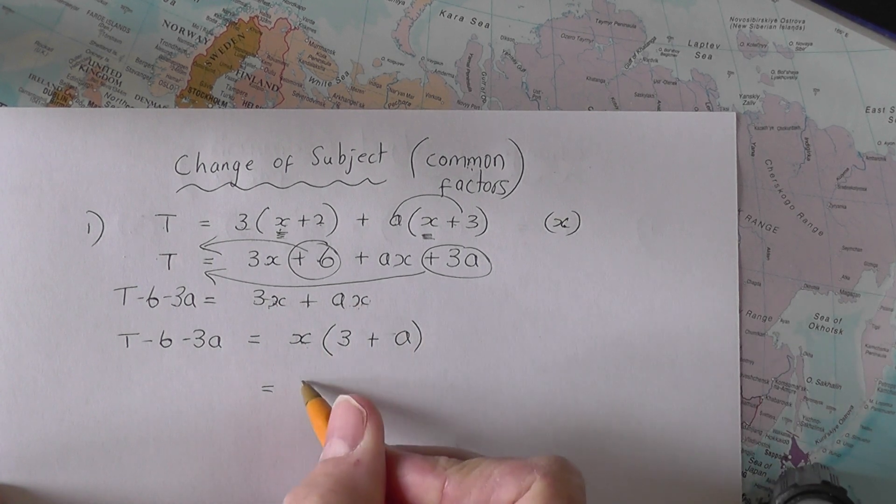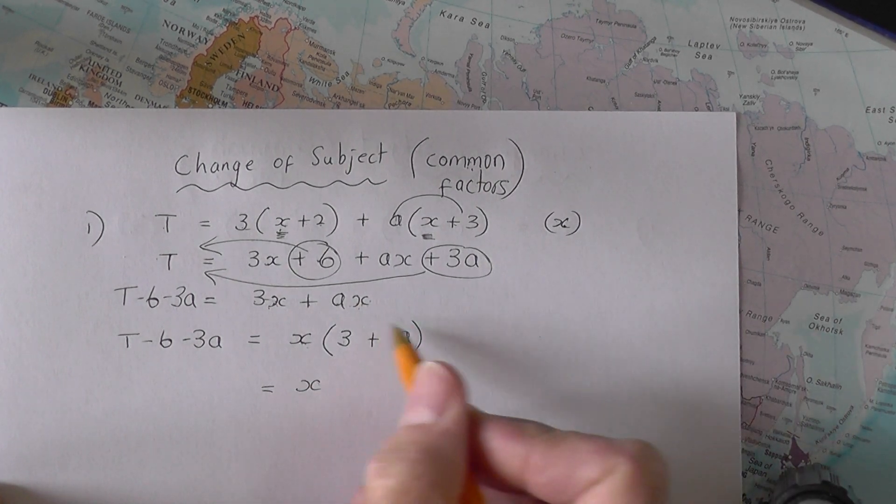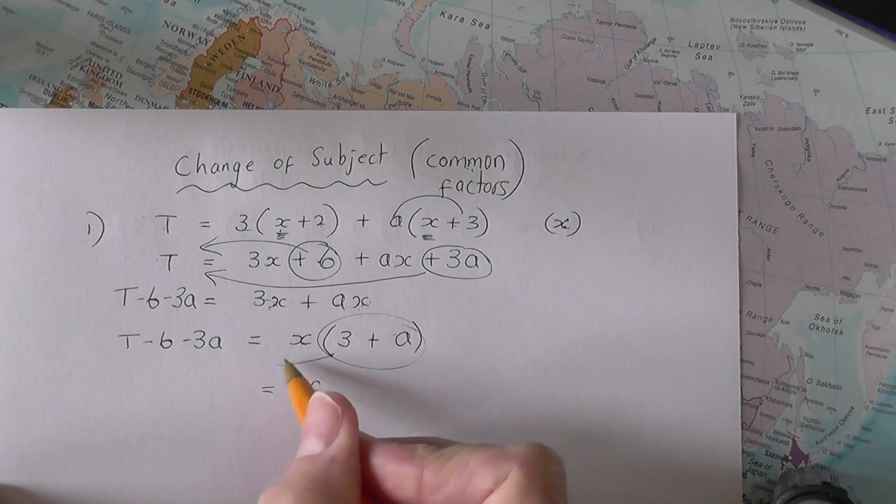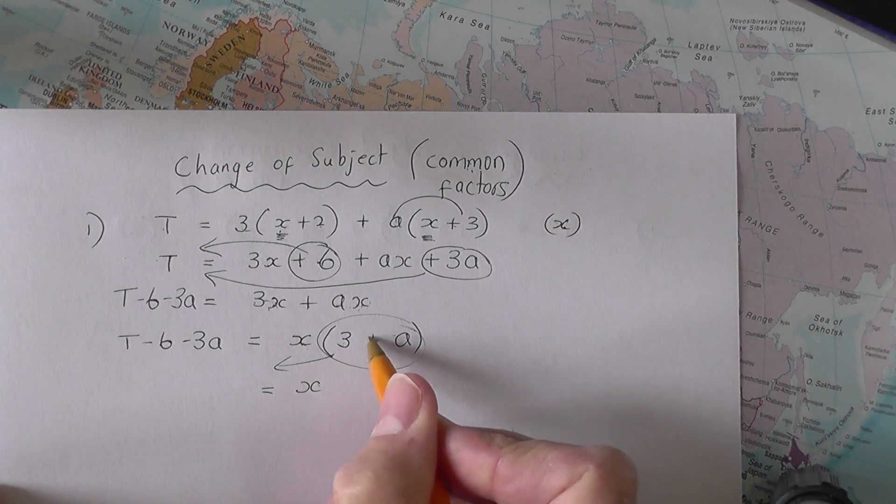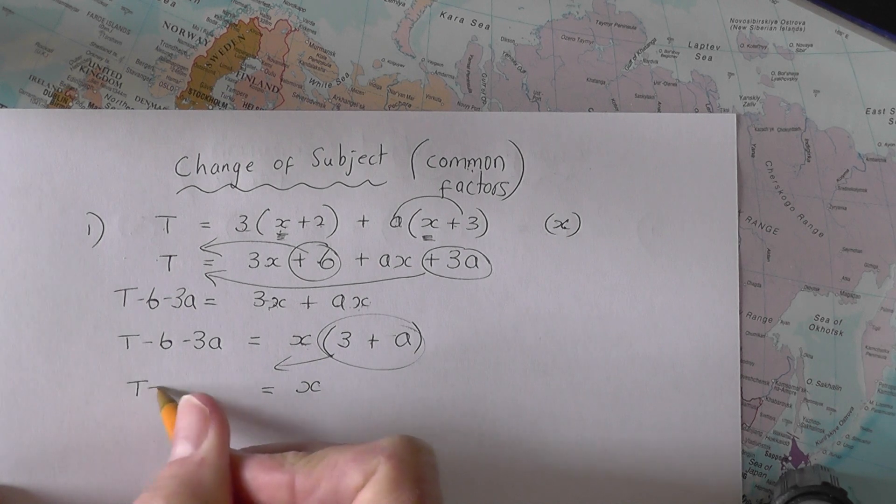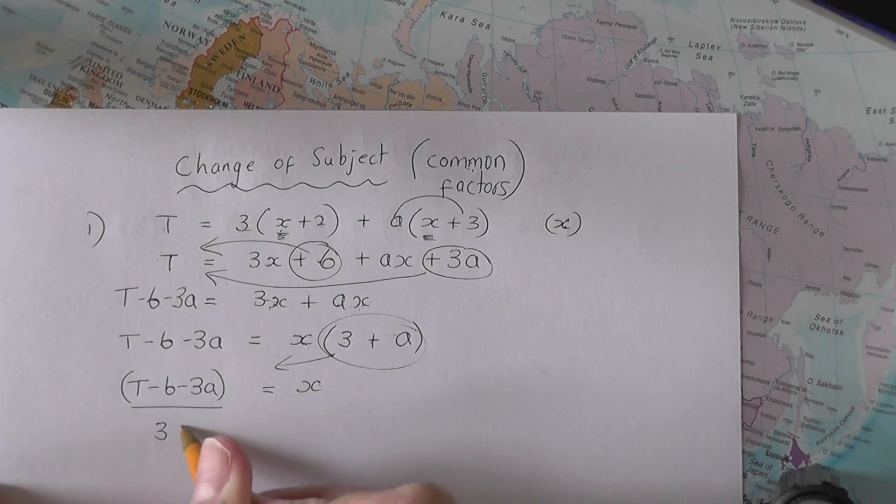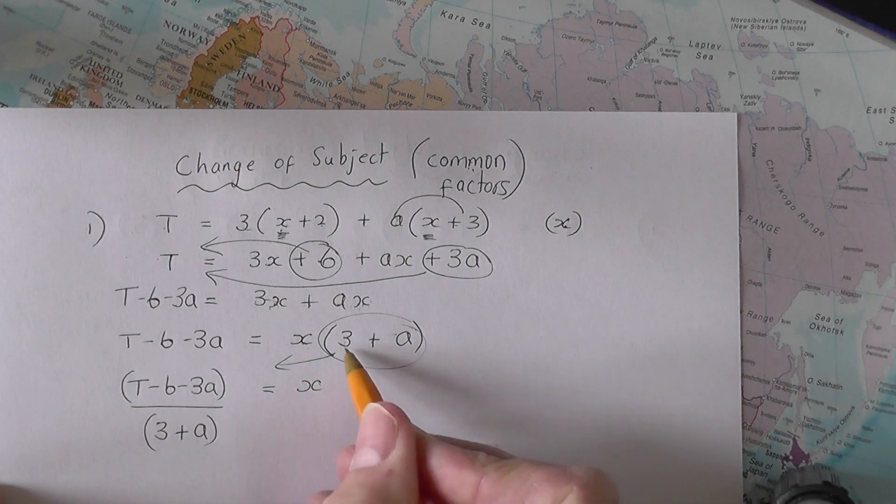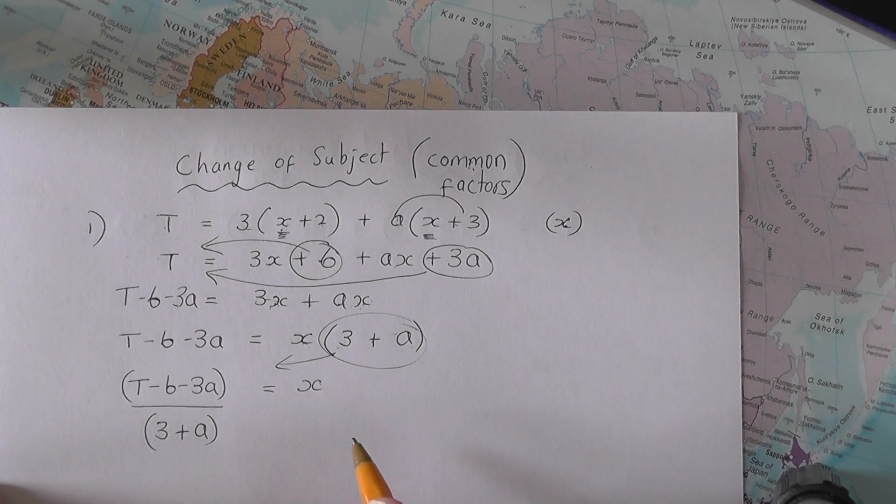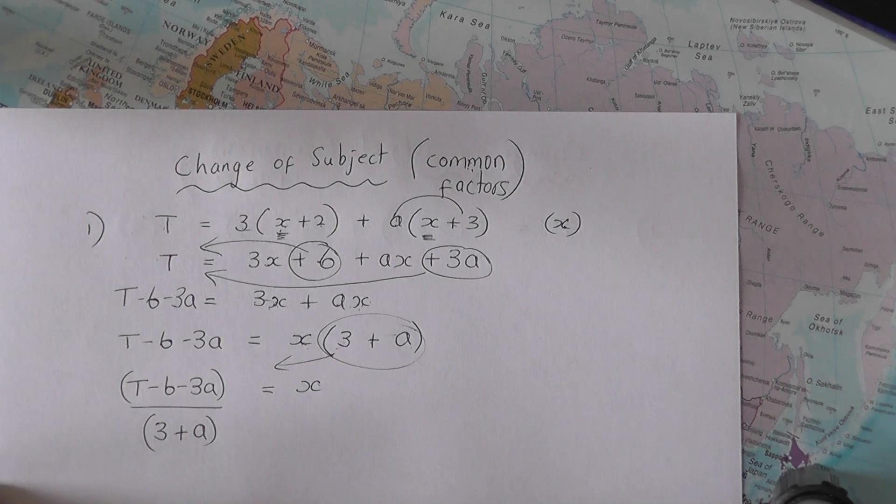And that means I can leave the X where it is and I can take that bracket to the other side. It's X times the bracket on the other side. It's going to be T minus six minus three A in a bracket divided by the three plus A. Because if you take the three plus A to the other side, it becomes a divide. And you're just left with the X.